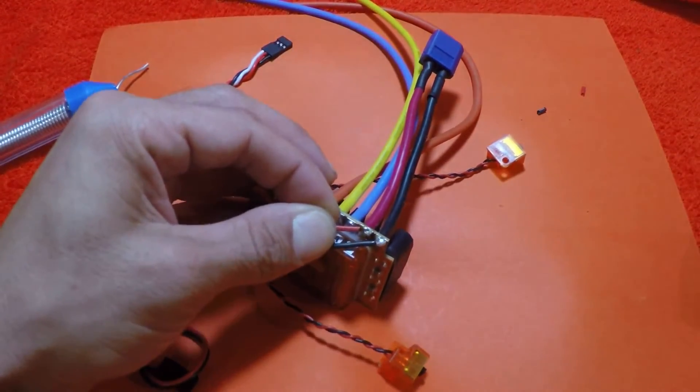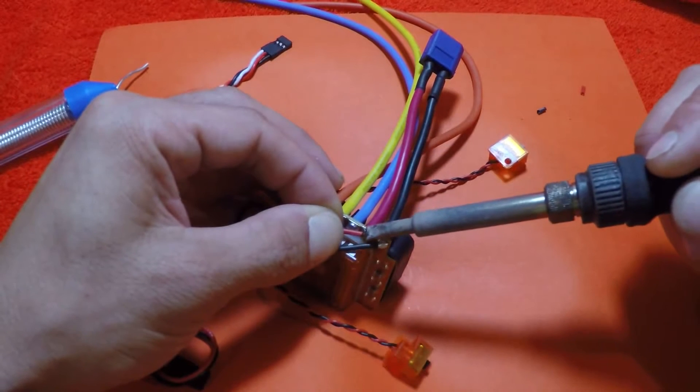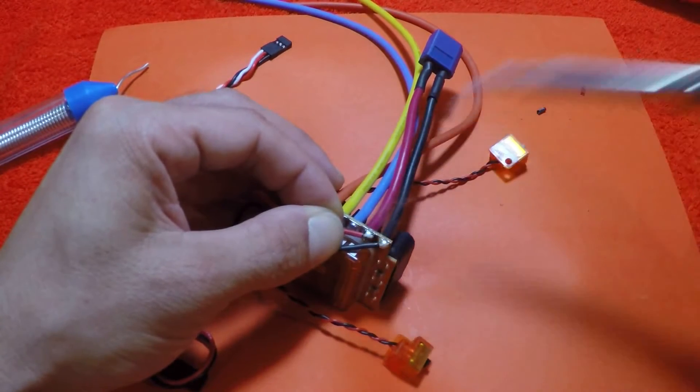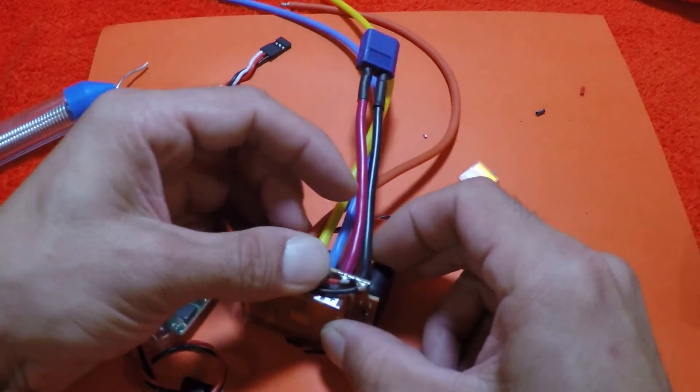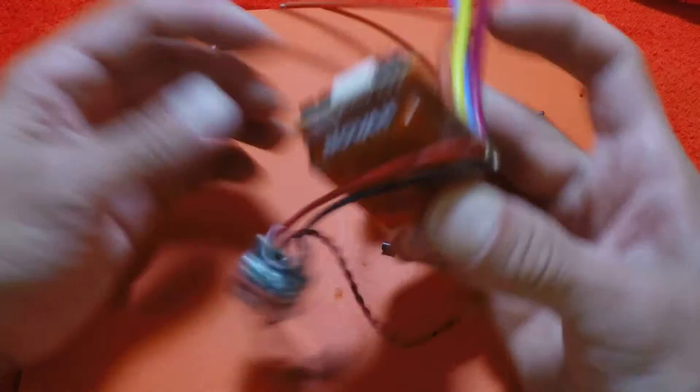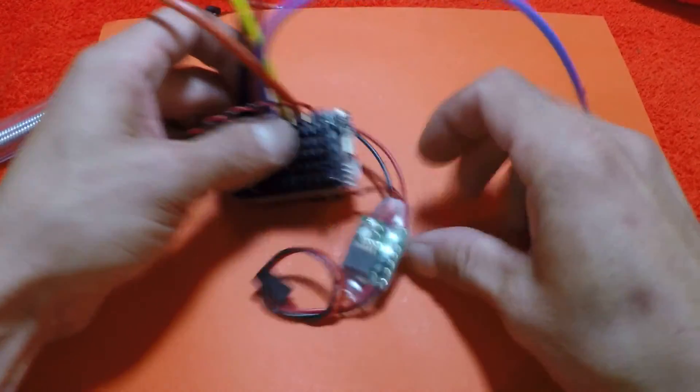Same thing with the red wire. I like to put these guys at a bit of an angle so that if the insulation does get mangled, they're not very likely to come in contact with any of the other wires. Lay it down right in there, BEC comes around the other side, there you have it.